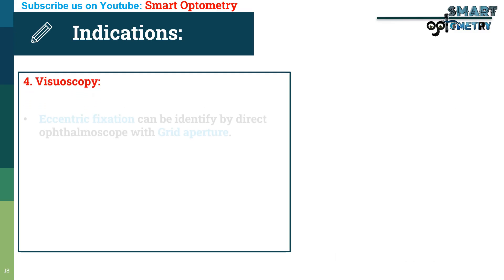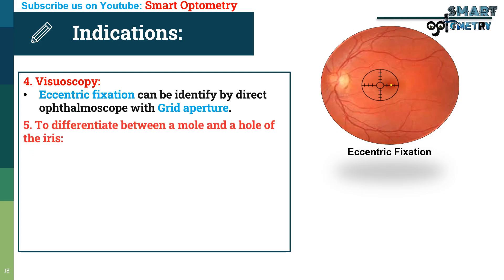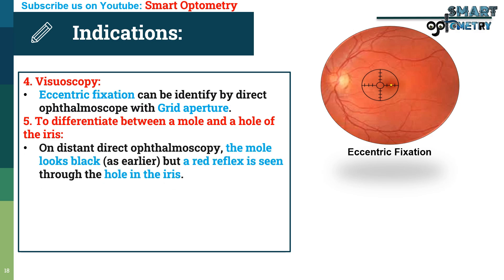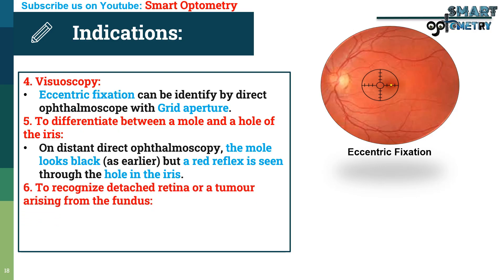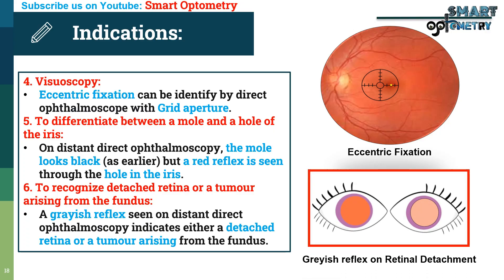4. Visuoscopy: eccentric fixation can be identified by direct ophthalmoscope using the grid aperture. Visuoscopy is important for patients with amblyopia or strabismus. 5. To differentiate between a mole and a hole of the iris: on distant direct ophthalmoscopy, the mole looks black but a red reflex is seen through the hole in the iris. 6. To recognize a detached retina or a tumor arising from the fundus: a grayish reflex is seen instead of the red reflex on distant direct ophthalmoscopy, indicating either a detached retina or a tumor arising from the fundus.